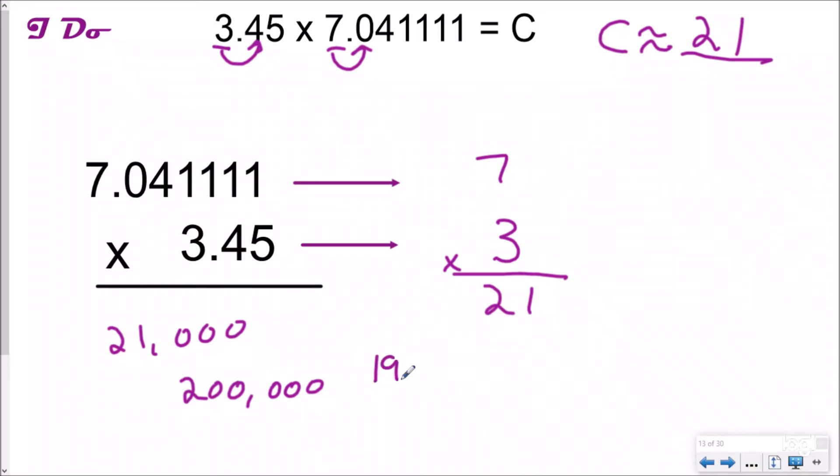If I get something around, you know, 19.74, well, then yeah, that would be reasonable because they're pretty similar to each other.